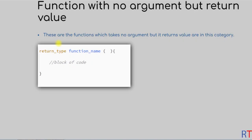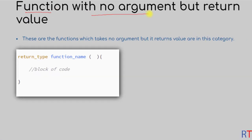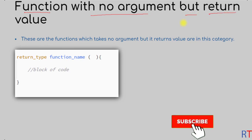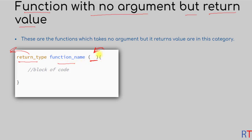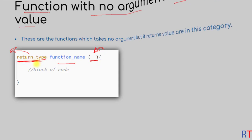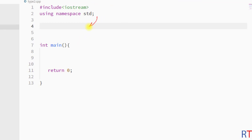In this video we're going to talk about user-defined functions with no argument but with one return value. These are functions which take no argument but return one value. We leave the parameter section blank to indicate that this method will not take any argument, and the return type can be any valid data type.